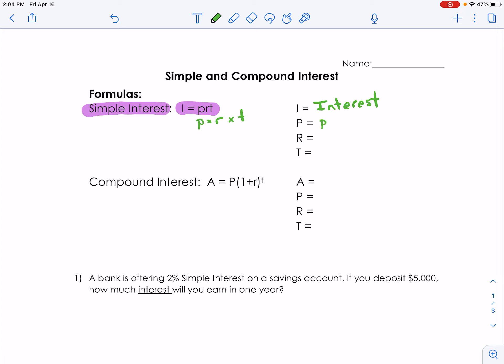P is the principal, which is the money that we're either starting with or the money that we're borrowing, so the amount of money.